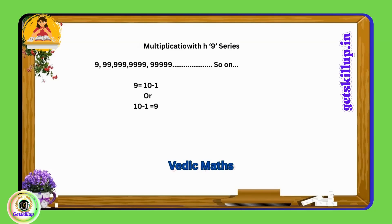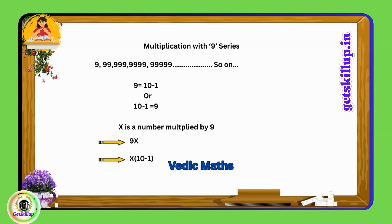9 can be expressed as 10 minus 1. In other words, 10 minus 1 equals 9. So, for any number x, if we want to multiply x by 9, it becomes 9x. We can also write it as x multiplied by 10 minus 1. Let's illustrate this logic with an example.